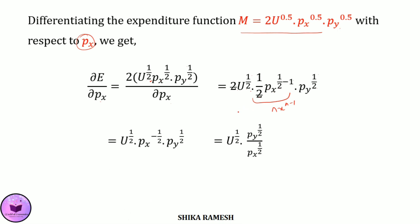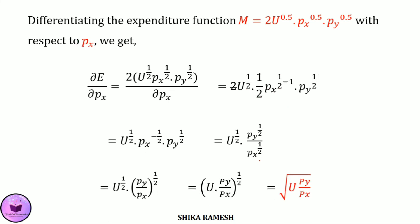Solving further: U raised to 1/2 multiplied by Px raised to minus 1/2 multiplied by Py raised to 1/2. Rearranging, this is U raised to 1/2 multiplied by Py raised to 1/2 divided by Px raised to 1/2, which equals the square root of U multiplied by Py divided by Px. This is precisely the Hicksian demand for good x, confirming Shephard's Lemma and completing the discussion of the expenditure function and its properties.